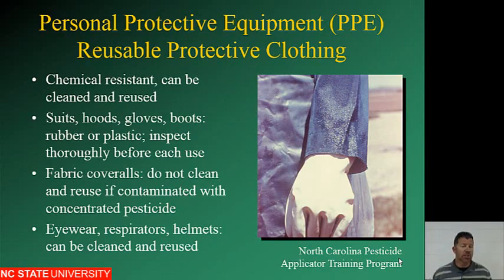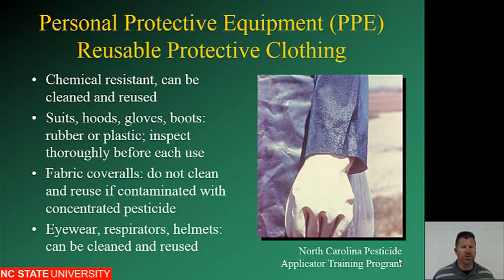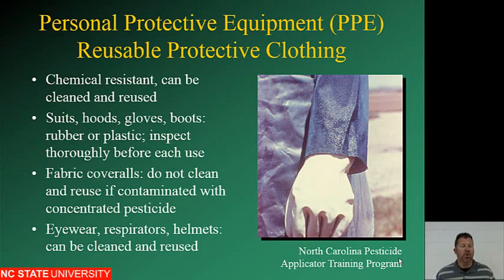Reusable protective clothing: chemical resistant items can be cleaned and reused — suits, hoods, gloves, boots made of rubber or plastic. Inspect them each time you use them. Fabric coveralls that are contaminated with concentrated pesticide should not be cleaned and reused — throw them away. Eyewear, respirators, and helmets can be cleaned and reused. Even regular work clothes should be washed separately. Do not wash them with your children's or spouse's clothes. Wash pesticide-exposed clothing as soon as you bring it in — don't let it sit and contact other clothing.